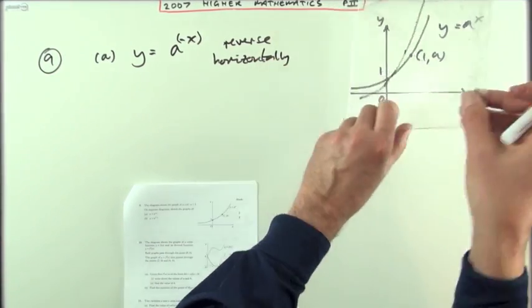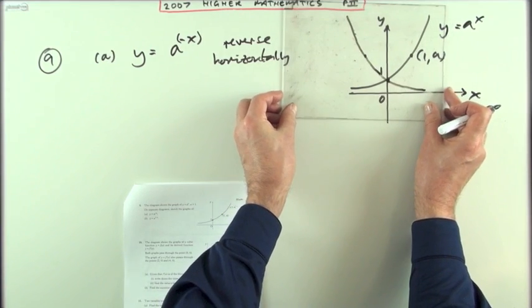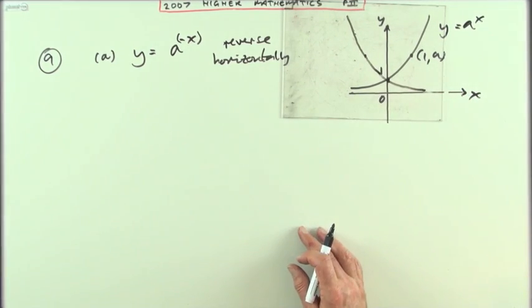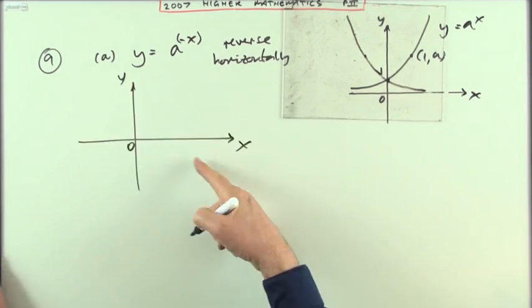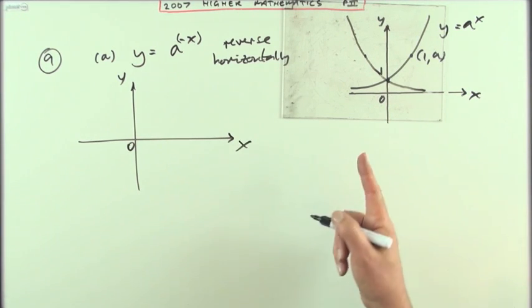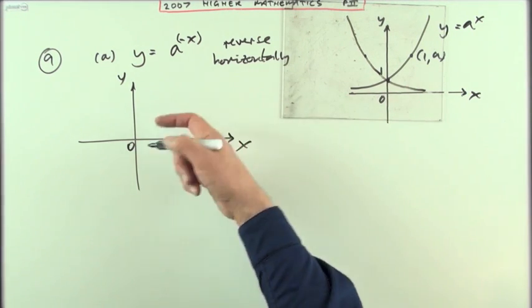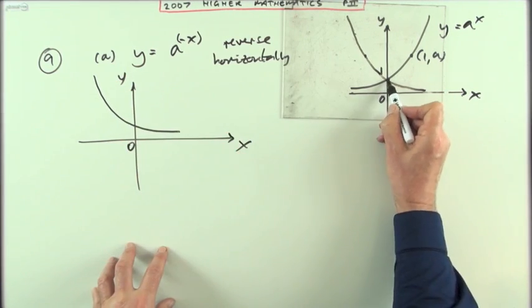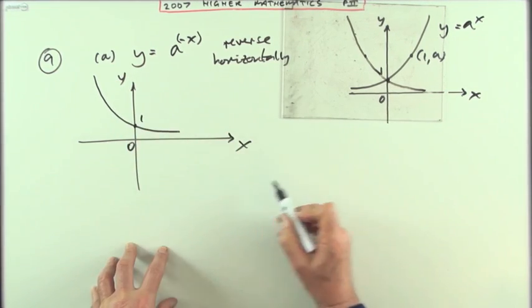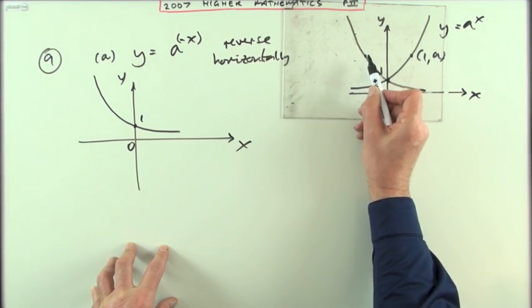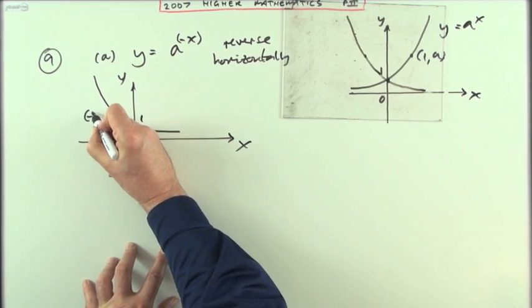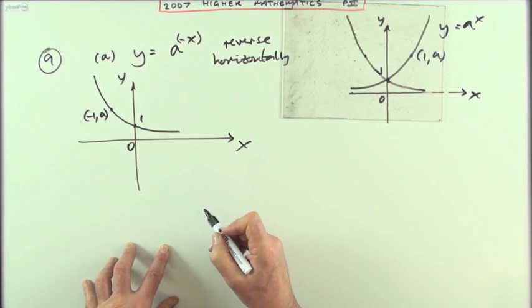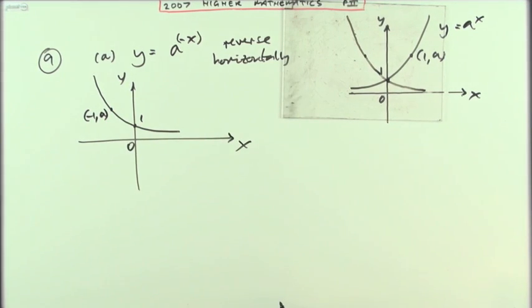So it'll just end up looking like this. If I put down a set of axes like that, then I can just switch that over here and draw it. It's going to end up looking like this where that point stays the same, so it's still at one, but the point that was at (1,a) will now be at (-1,a), and those are the points I can put down. That's the graph for part a.